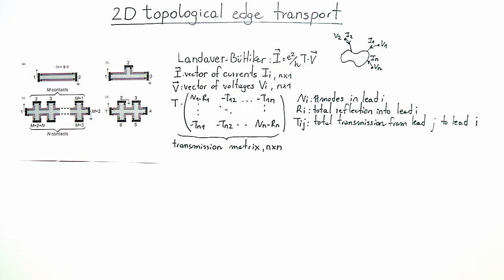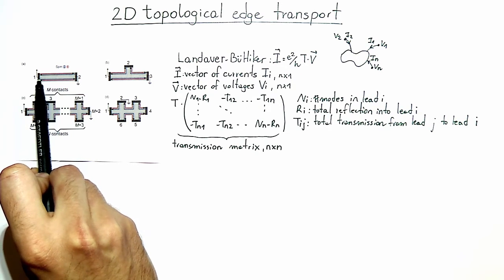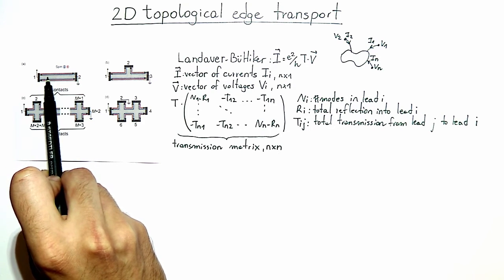Welcome to the video solution of the exercise problem '2D Topological Edge Transport.' In this problem we are going to look at a two-dimensional topological insulator system and how it behaves when an electric current is passed through it. A two-dimensional topological insulator is a system in which two counter-propagating spin-polarized edge channels exist at each edge, as pictured in this figure, while the bulk is insulating.